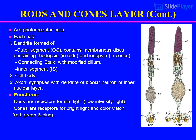Functions: rods are receptors for dim light, low-intensity light. Cones are receptors for bright light and color vision — red, green, and blue.